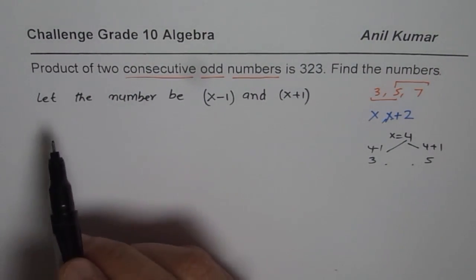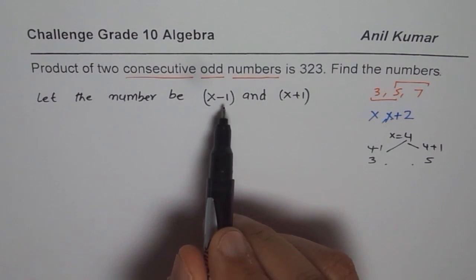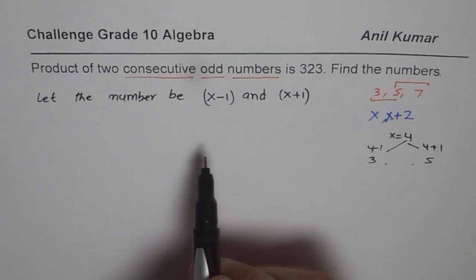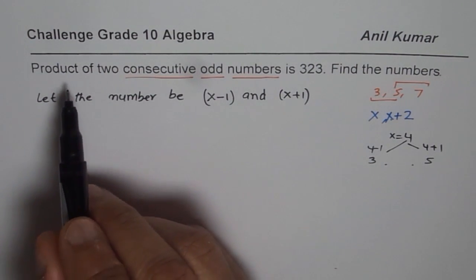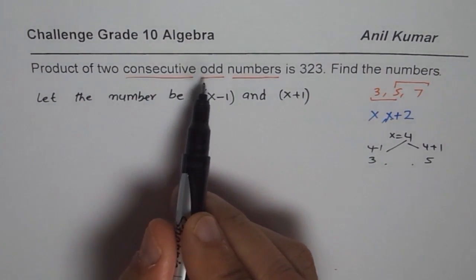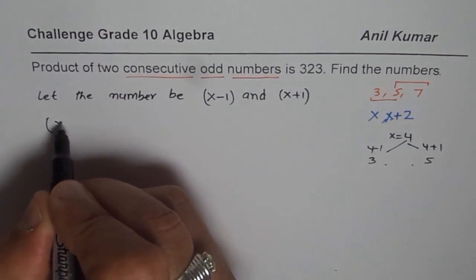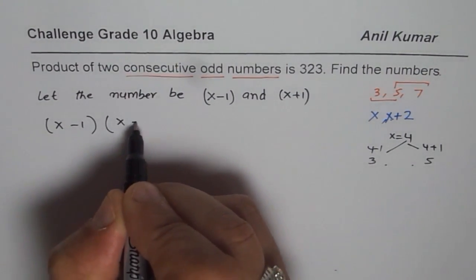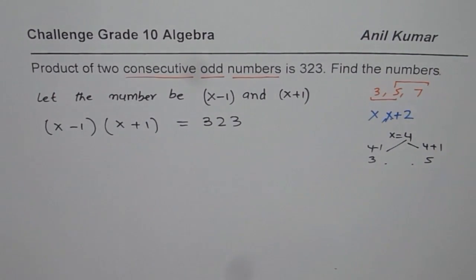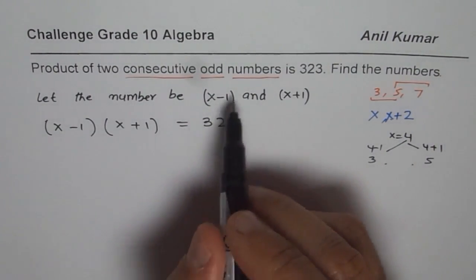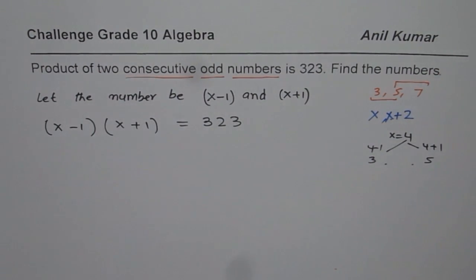So let the numbers be x minus 1 and x plus 1. They are two numbers which skip one. So they are either odd or even. But now my equation will be product of two consecutive odd numbers is 323. So when I multiply them that means if I do x minus 1 times x plus 1 I should get 323. That is how you form an equation.